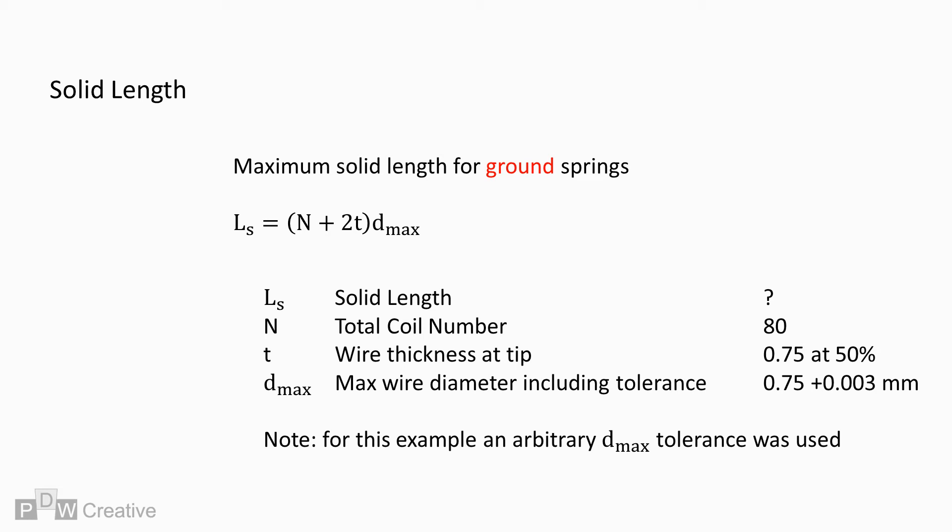For ground springs, the calculation is the total coils plus 2 times the wire thickness at the tip times max wire diameter. As the ends are ground, the tips will have a flat section. For this example, the wire thickness at tip is 50% ground, so we will have lost half the wire OD at each end.